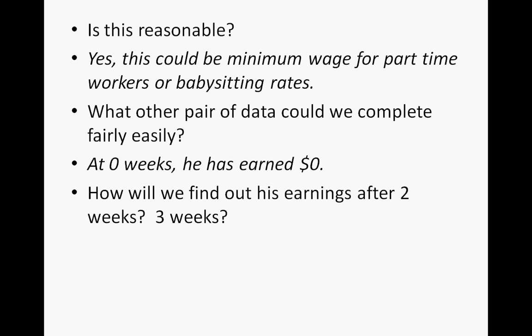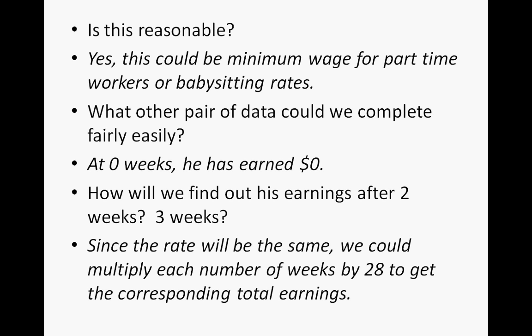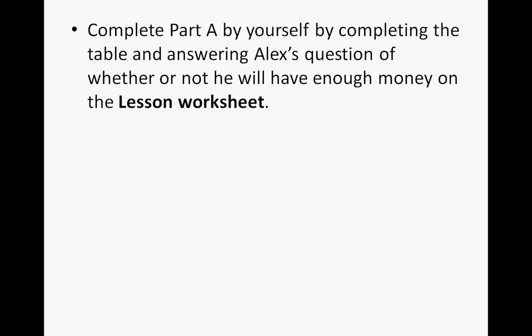How will we find his earnings after two weeks or three weeks? Write what those earnings would be and explain how you find them. Since the rate will be the same, we can multiply each number of weeks by 28 to get the corresponding values. Two times 28 would be $56, and three times 28 would be $84. Complete part A by yourself — complete the table and answer Alex's question of whether he will have enough money on the lesson worksheet. When you are done, go ahead and continue the video.